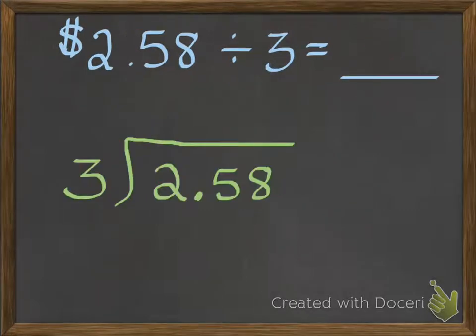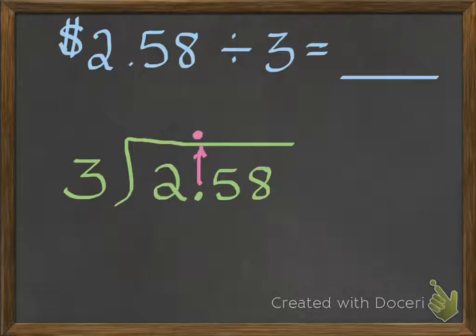Let's do the actual algorithm. So $2.58 divided by three. Some people were worried you can't divide a smaller number by a bigger number — well, actually you can. Now, the first step we take before we do any division is we're going to put the decimal point in our answer directly above the decimal point that's in the dividend. You just put it directly above — that's the very first thing you do. It's very important that you do that first. Then we're going to start dividing just like we would if that decimal point wasn't there.